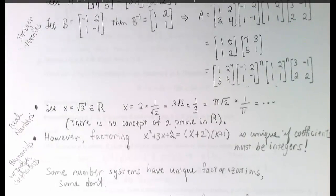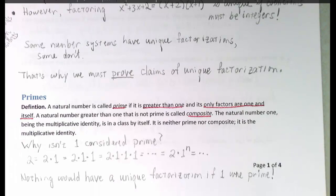However, when we turn to polynomials with integer coefficients, it turns out that these do admit unique factorizations. x² + 3x + 2, for instance, has a unique factorization into non-factorable polynomials as (x + 2)(x + 1). So, some number systems have unique factorizations, and some don't. That is why we must prove claims of unique factorization.